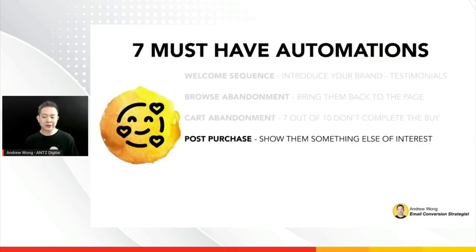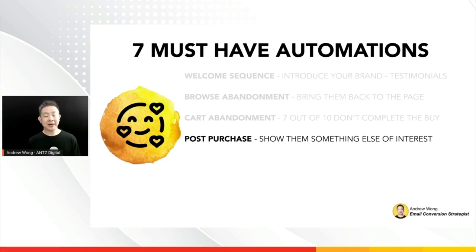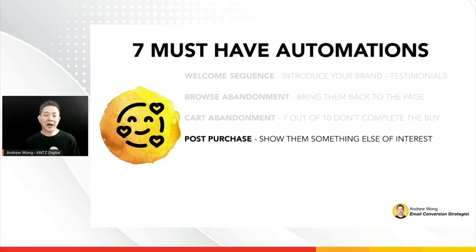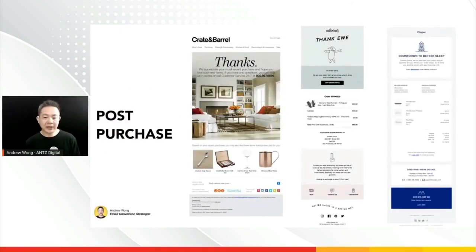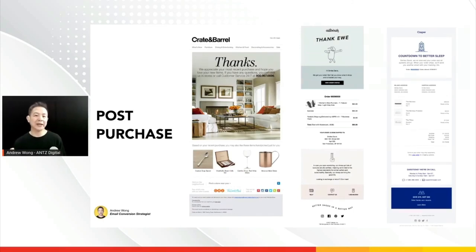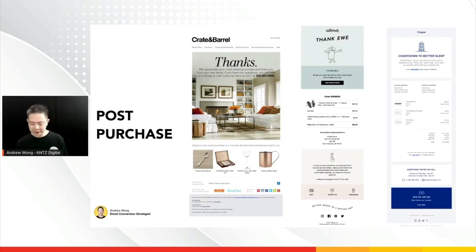Post-purchase: they've already bought something from you. You can show them something else of interest because you already know the SKU they bought. You can match it with other SKUs to encourage additional purchases. This is where you increase your LTV or accelerate it. Crate and Barrel are among the examples — you can look at them in the handouts later.